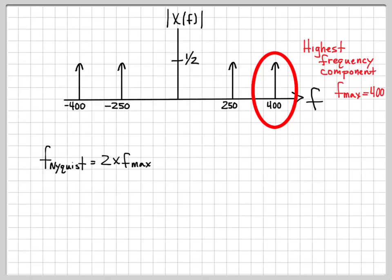So now we can compute the Nyquist rate. The Nyquist rate is just 2 times the largest frequency component. So in our case, that's 2 times 400, which is 800 hertz. So this is the Nyquist sampling rate for this problem.